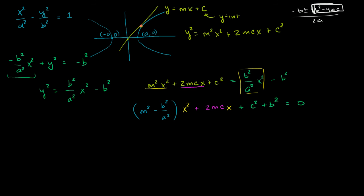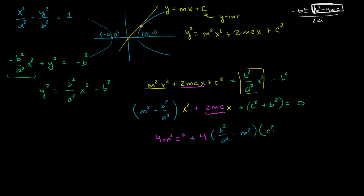In our quadratic, B = 2mc, so B² = 4m²c². And A = (m² − b²/a²), C = (c² + b²). So the discriminant condition gives: 4m²c² − 4·(m² − b²/a²)·(c² + b²) = 0. Note that I've flipped the sign on A by writing it as −(b²/a² − m²) to keep track of signs. This equals zero when the line is tangent — only one solution.